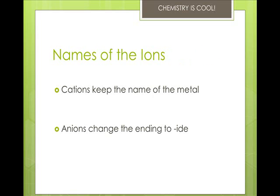Cations will keep the name of the metal. So in other words, calcium, when it's a 2+, it's Ca2+, which is the calcium ion. However, anions will change the ending to -ide once they become an anion. So chlorine, when we add an electron, we get the chloride ion, which is Cl-1.